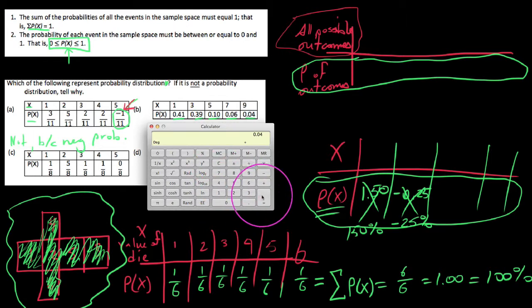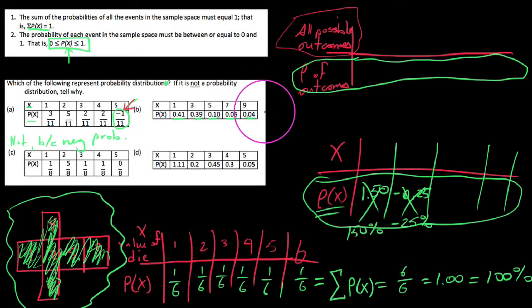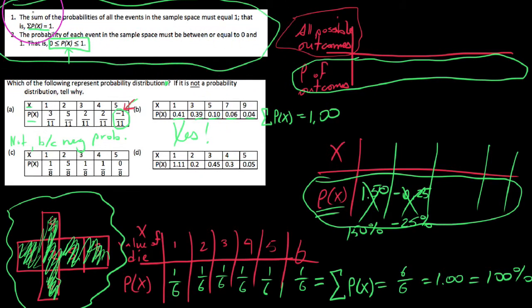That is, if I add the 41%, plus the 39%, plus the 10%, plus the 6%, 0.06, plus 0.04, and notice that we get 1. That is, if we were to sum all these probabilities, we added them up to the entire sample space. So yes, this would represent a probability distribution because it does abide by the two properties up top. So these last two I'll do a little bit quicker.